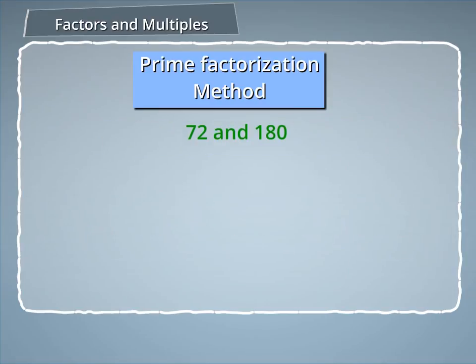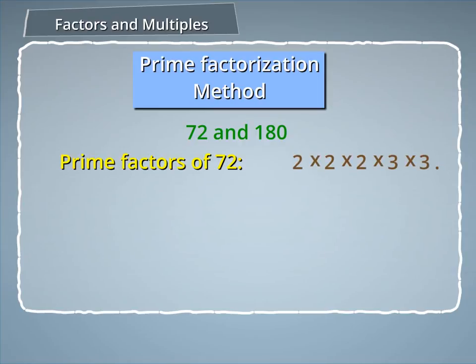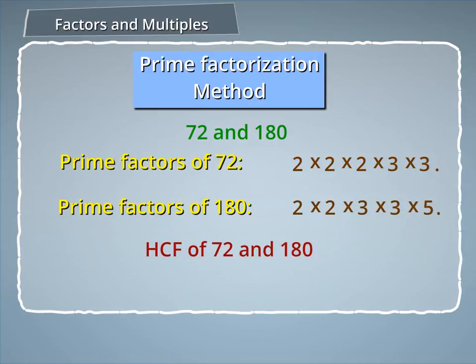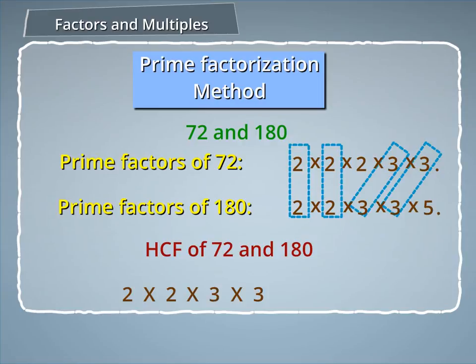Let us take the example of 72 and 180. The prime factors of 72 are 2 × 2 × 2 × 2 × 3 × 3. Similarly, the prime factors of 180 are 2 × 2 × 3 × 3 × 5. Therefore, the HCF of 72 and 180 is 2 × 2 × 3 × 3, which equals 36.